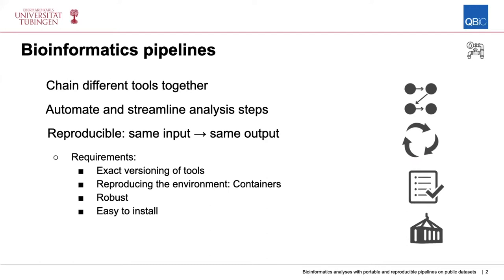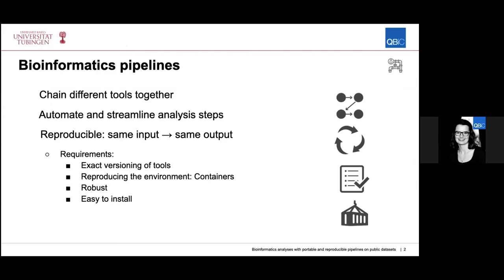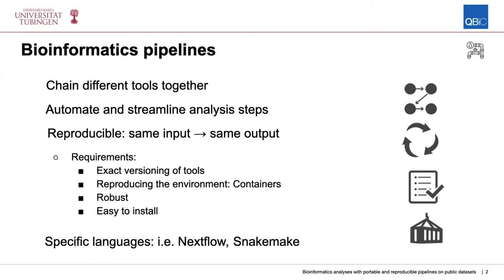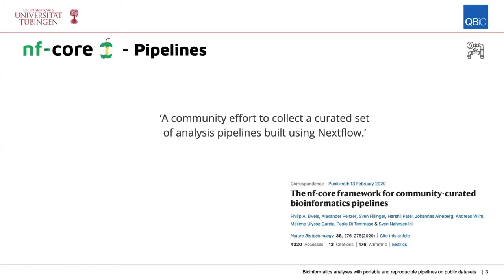For reproducibility, we have a few requirements. All the tools used in a pipeline need to be exactly versioned. The runtime in which the pipeline was run needs to be reproducible — that's what we use containers for, such as Docker or Singularity. Pipelines should also be robust and easy to install, because if nobody can run your pipeline, they can't reproduce your research. There are specific languages to help with this, namely Nextflow and Snakemake.